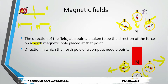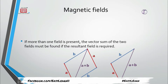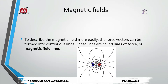If more than one field vector is present in a particular area, since the magnetic field is a vector quantity, we can add these vectors the same way we add basic vectors in physics using a vector diagram to find the resultant vector. These force vectors can be formed into continuous lines called lines of force. Lines of force are obtained by joining all the points recorded by the compass needle.